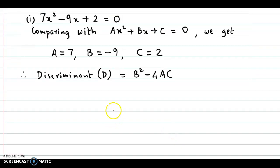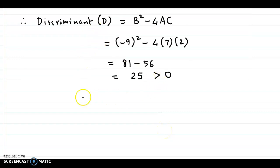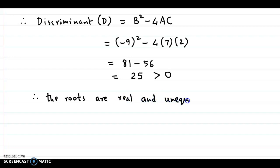Substituting these values: b² is minus 9 squared, which is 81, minus 4 into 7 into 2, that is 56. If we subtract, we get the value as 25, which is greater than 0. So the discriminant is greater than 0. Therefore, the roots are real and unequal.